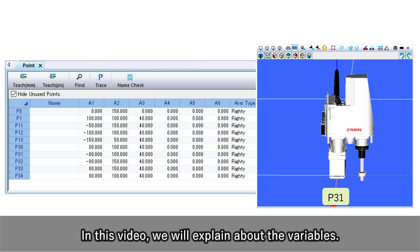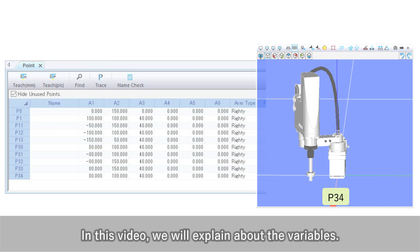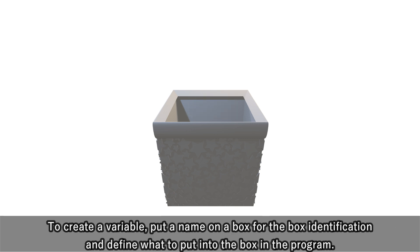In this video we will explain about the variables. A variable is a box that the value or characters can be stored temporarily. To create a variable, put a name on a box for the box identification and define what to put into the box in the program.